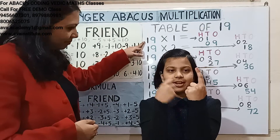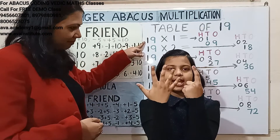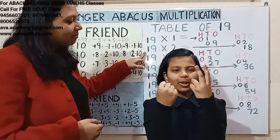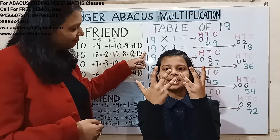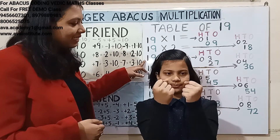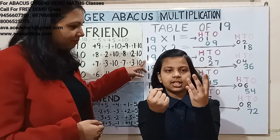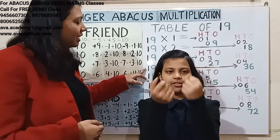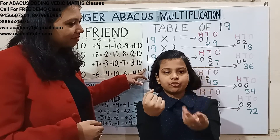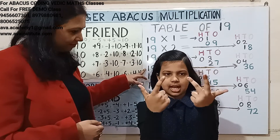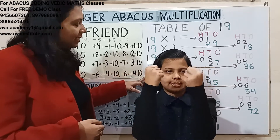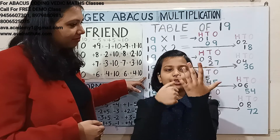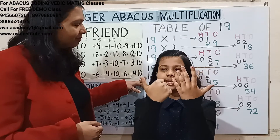19 ones are: 1 one is 1, 1×9 is 9 — answer is 19. 19 twos are: 1×2 is 2, 9×2 is 18 — answer is 38. 19 threes are: 1×3 is 3, 9×3 is 27 — answer is 57. 19 fours are: 1×4 is 4, 9×4 is 36 — answer is 76. 19 fives are: 1×5 is 5, 9×5 is 45 — answer is 95.